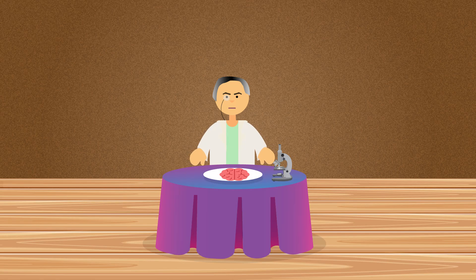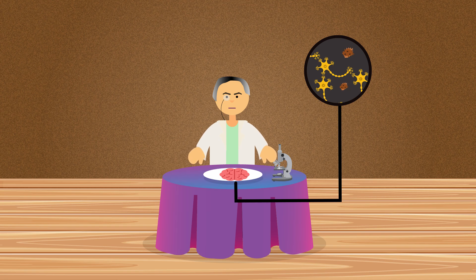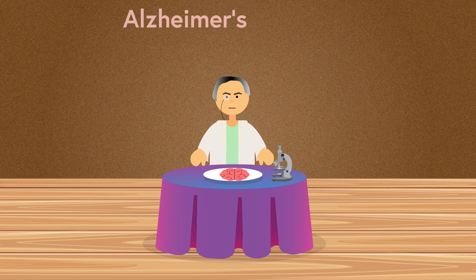In 1906, a psychiatrist and neuroanatomist named Alois Alzheimer reported his findings from examining the brain of a woman who experienced rapid memory loss and confusion in the years leading up to her death. He noted distinctive abnormal patterns of protein buildup in her brain. What he discovered eventually became known as Alzheimer's disease.